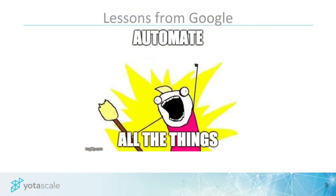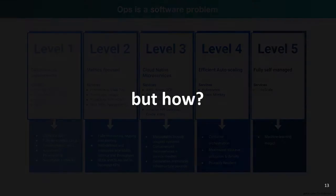So what's the lesson from Google? You've got to automate — automate all the things. But how? That's the hard part. You have to reserve cycles, but there are going to be some pragmatic limits you reach. You can automate, automate, automate — and there are going to be some limits.